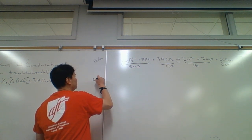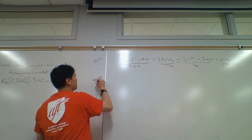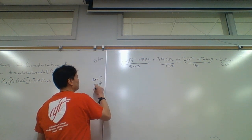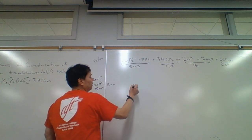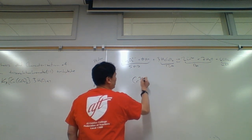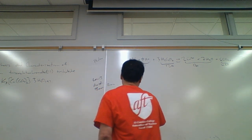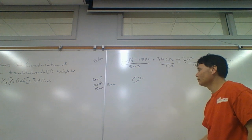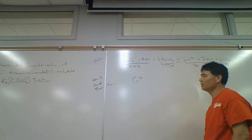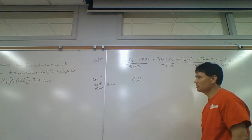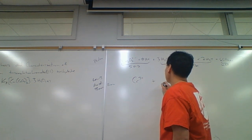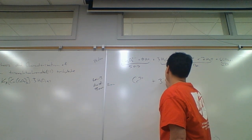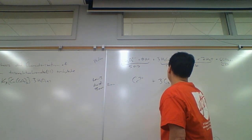Step two is going to be an acid-base reaction, and this is why we're adding excess potassium oxalate. This is going to be a Lewis acid-base reaction. The chromium-3 — now that we've formed the chromium-3 ion — we're going to attack it with the ligand. What's the ligand that we want? Oxalate.